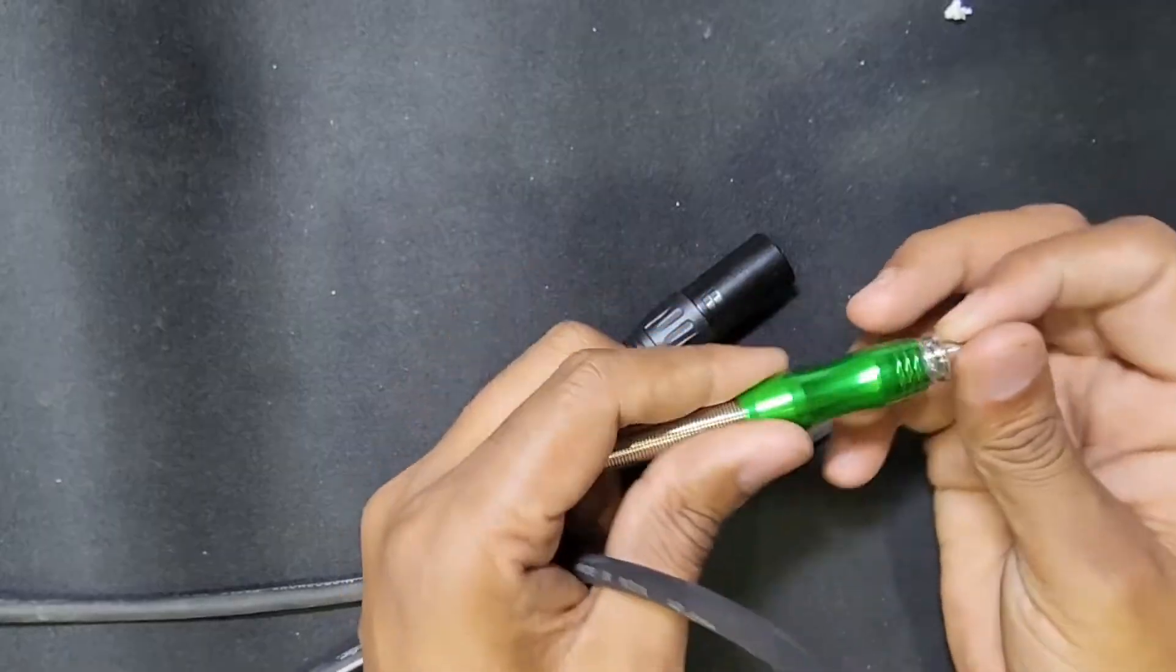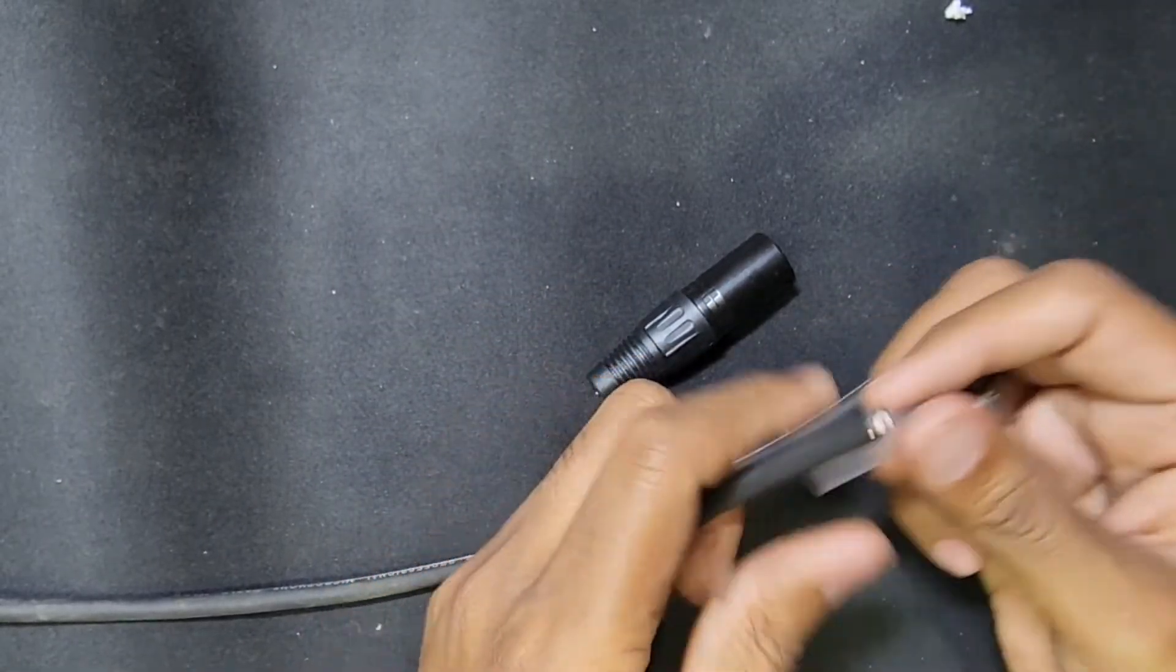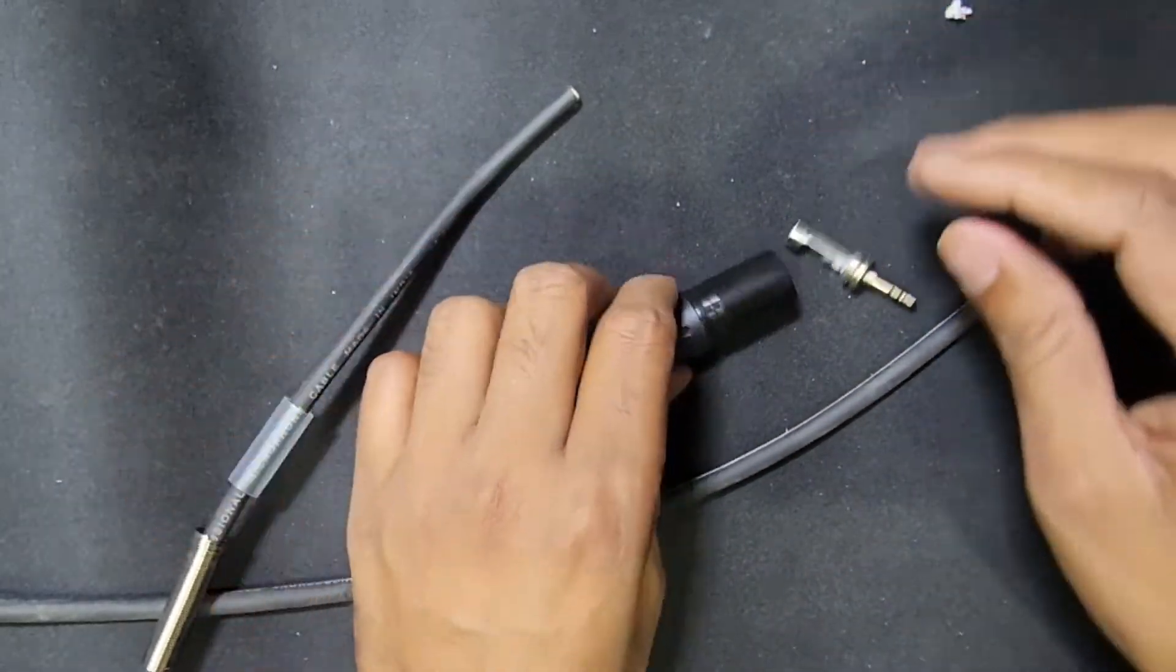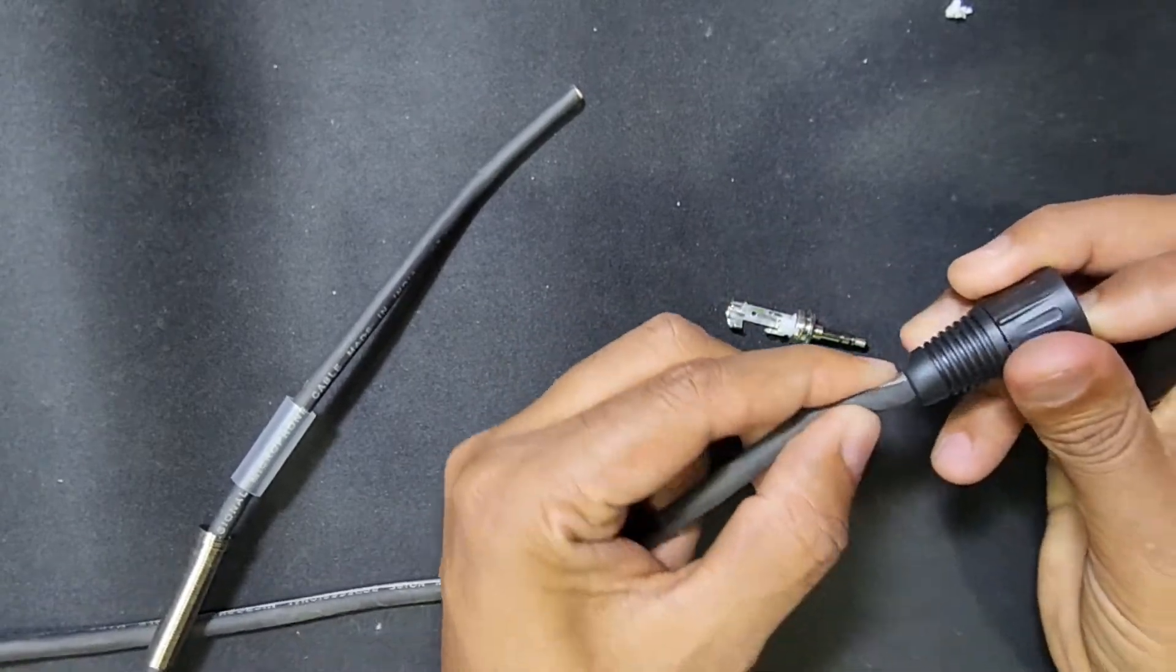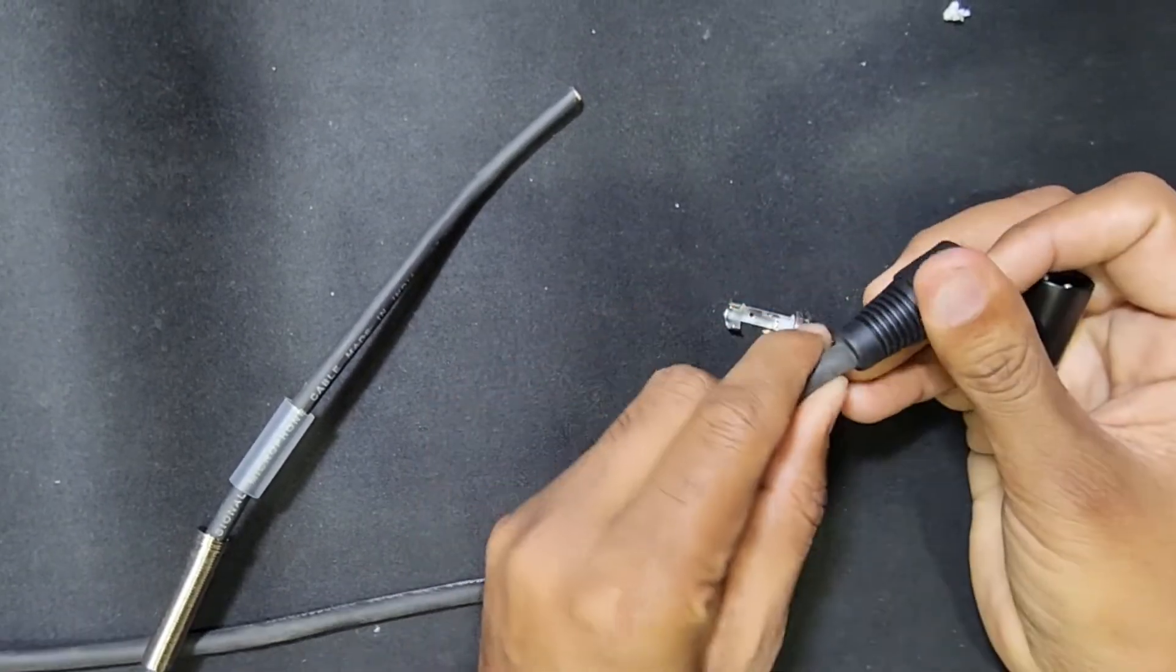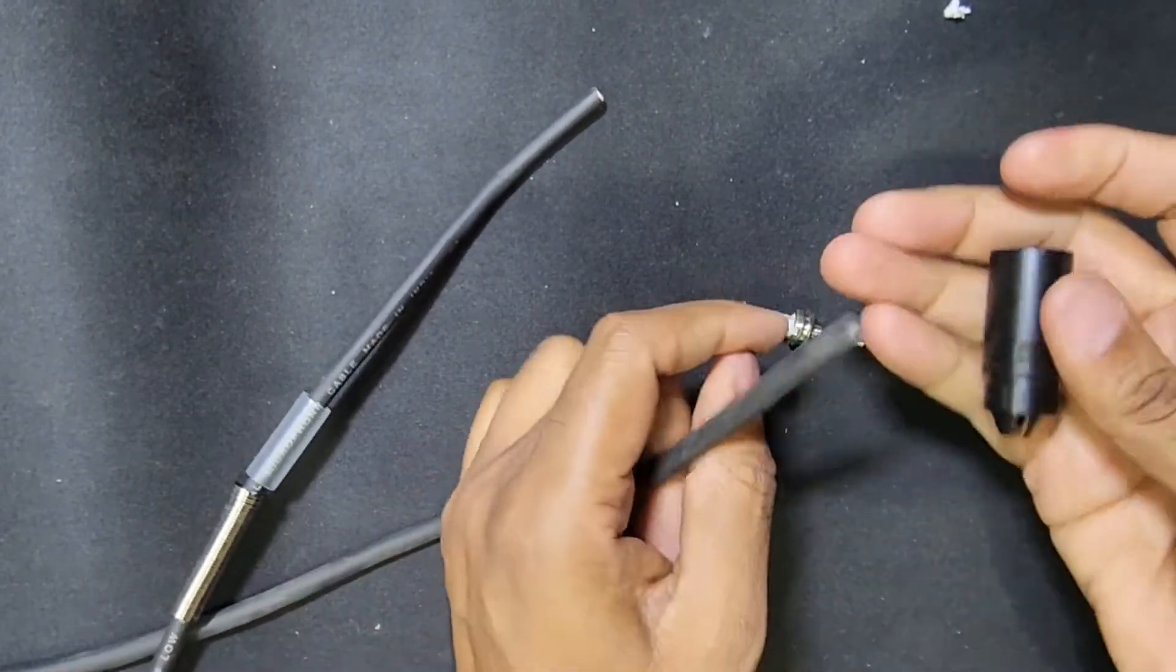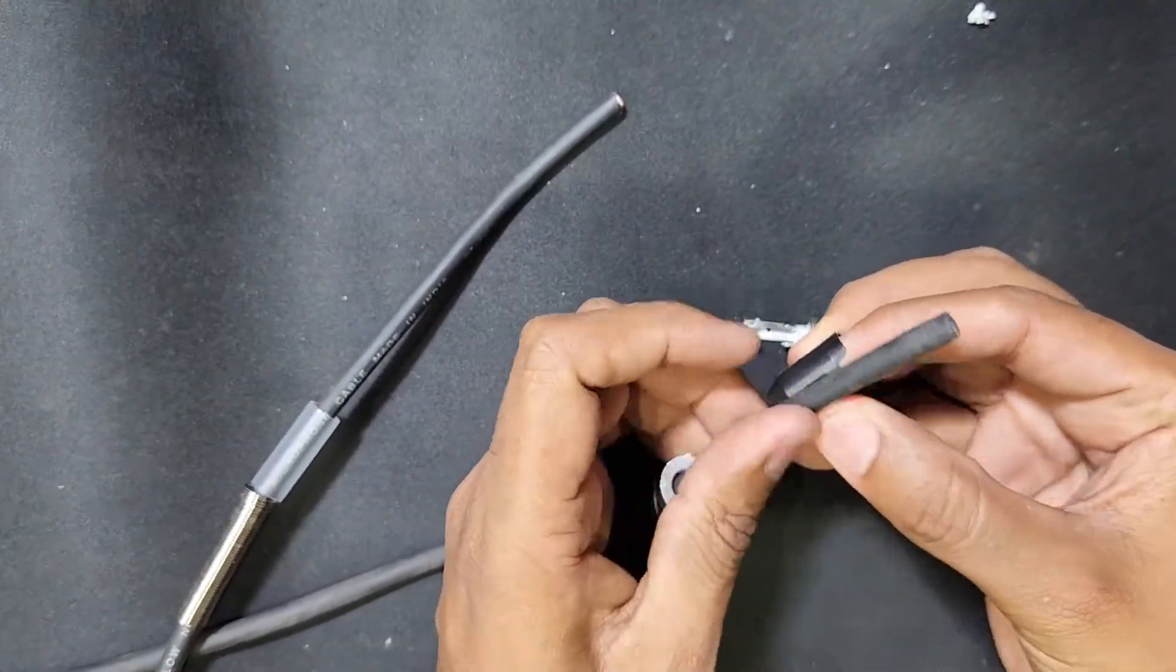First of all, you need a wire with three lines. I'm using a wire with three connections. On one side I'll put the 3.5mm jack, and on the other side the DMX XLR connector.